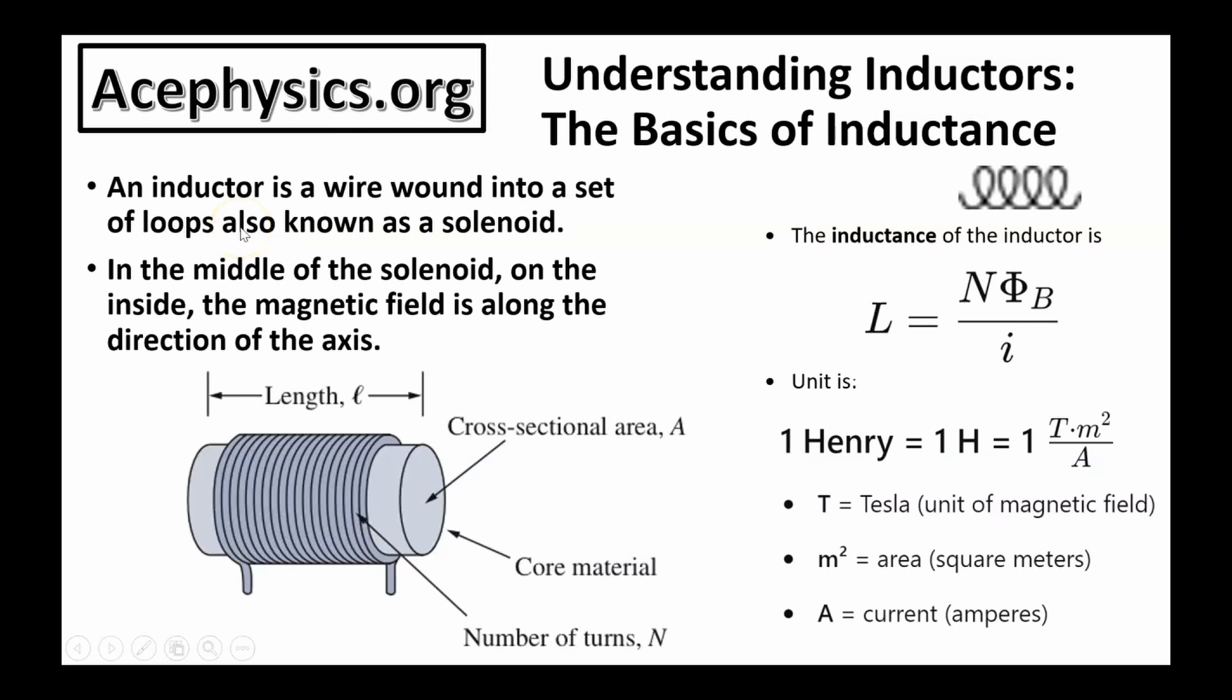To begin, what is an inductor? An inductor is a wire wound into a set of loops, and this is also known as a solenoid. Here's a picture of an inductor. This is a wire, and it's wound into N loops.